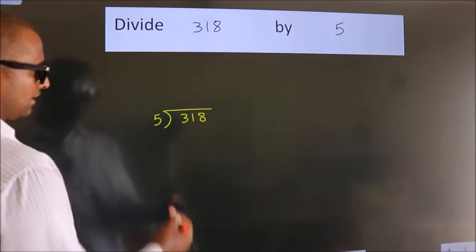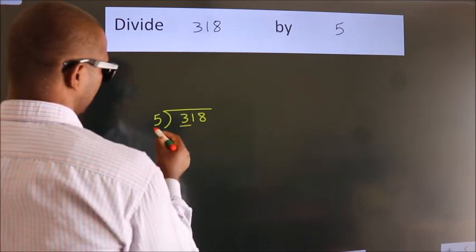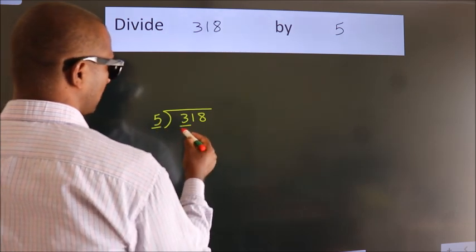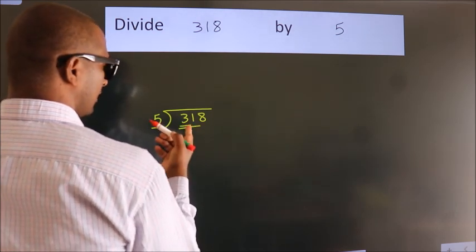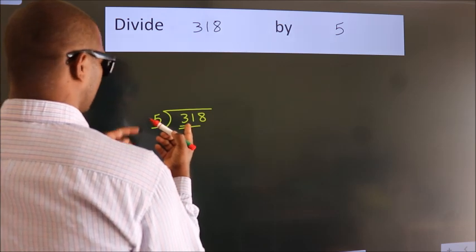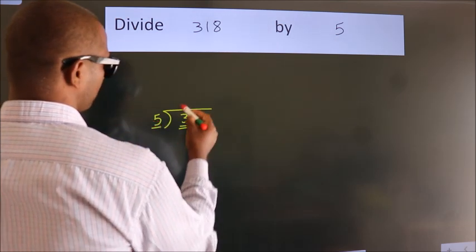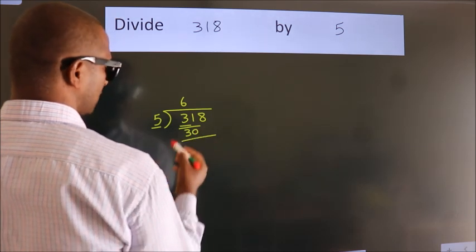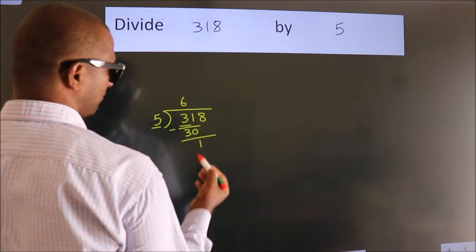Next. Here we have 3, here 5. 3 is smaller than 5, so we should take two numbers, 31. A number close to 31 in the 5 table is 5 times 6, 30. Now, we subtract. We get 1.